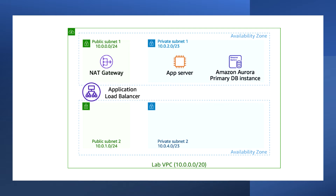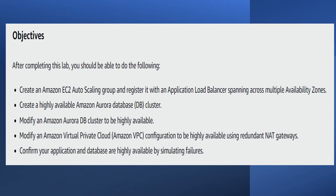As an AWS Solutions Architect, it is important to design systems to be highly available and fault tolerant when needed. After completing this lab, you should be able to: create an Amazon EC2 Auto Scaling group and register it with an Application Load Balancer spanning across multiple Availability Zones, create a highly available Amazon Aurora DB cluster, modify an Amazon Aurora DB cluster to be highly available, modify an Amazon VPC configuration to be highly available using redundant NAT gateways, and confirm your application and database are highly available by simulating failures.